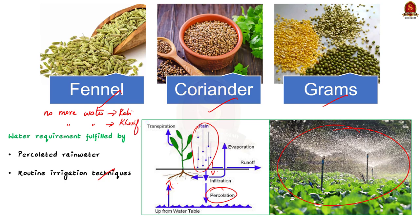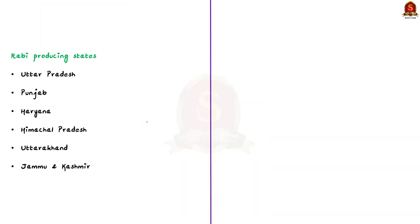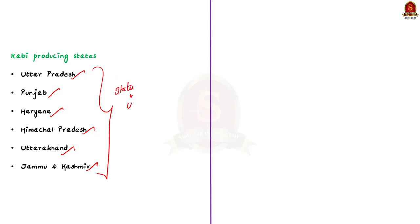This is about the Rabi season and the Rabi crops. Before concluding our discussion, let us see the states that produce Rabi crops in India. Uttar Pradesh, Punjab, Haryana, Himachal Pradesh, Uttarakhand, Jammu and Kashmir are a few of the states and union territories that lead in Rabi crop production.